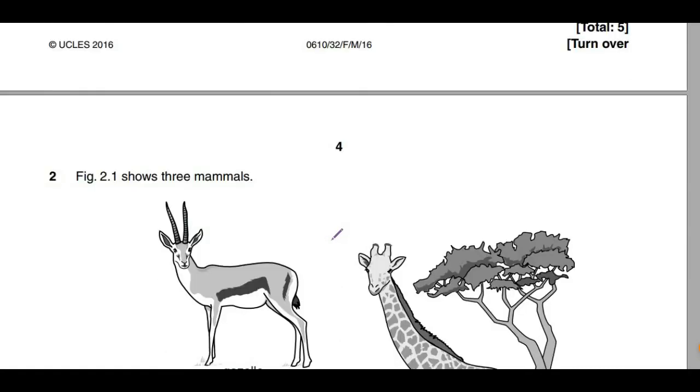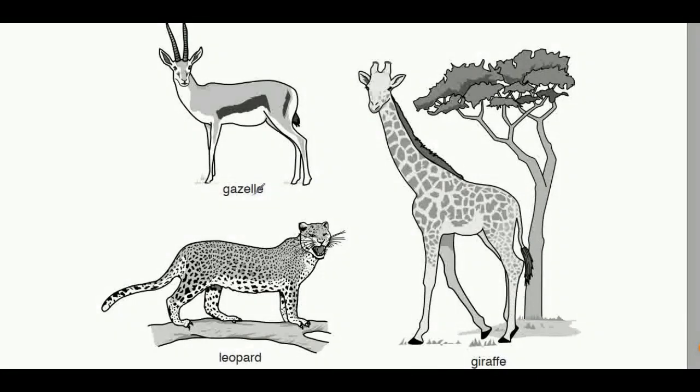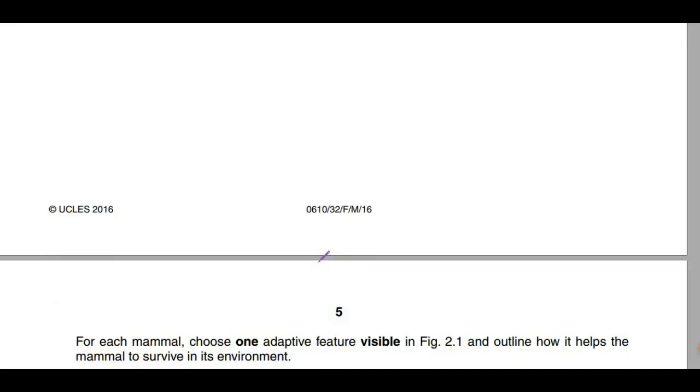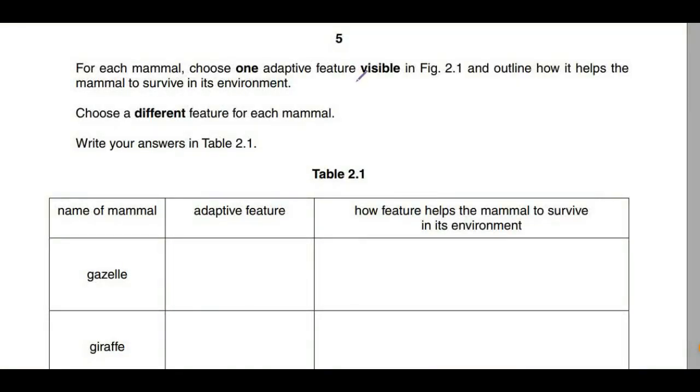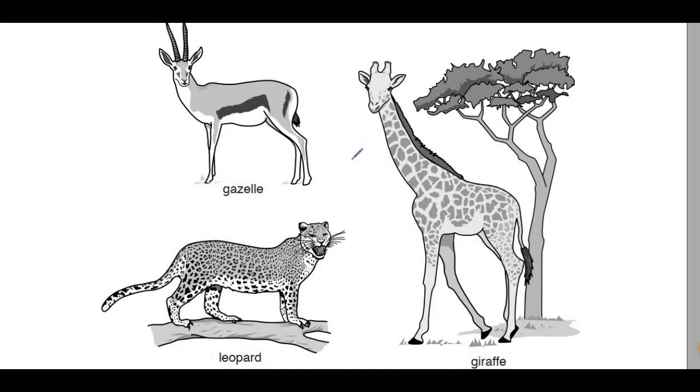The second question says figure 2.1 shows three mammals: gazelle, giraffe, and leopard. For each mammal choose one adaptive feature visible in figure 2.1 and outline how it helps the mammal to survive in its environment. Choose a different feature for each mammal. Write your answers in table 2.1: the name of the mammal, the adaptive feature, and how that feature helps the mammal to survive.